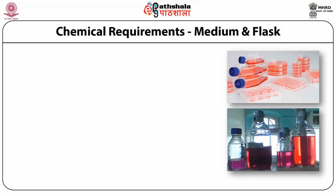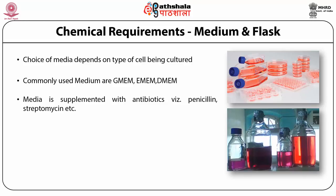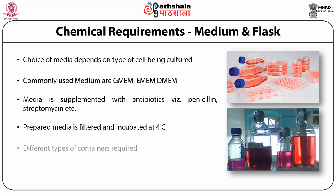The chemical requirements include medium and culture vessels. The medium should depend upon the type of cells being maintained. Various types of media are available such as MEM, DMEM, and RPMI. The media should be supplemented with penicillin, streptomycin, or other antibiotics to reduce bacterial contamination, filtered, and incubated at 4 degrees Celsius. The sterility of media should be checked at various stages of animal cell culture.